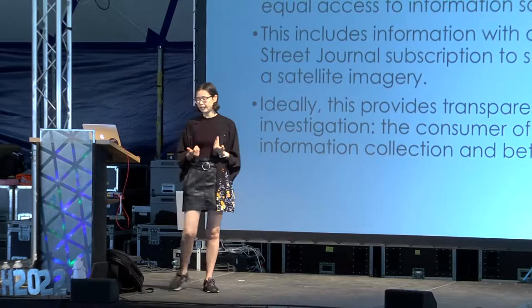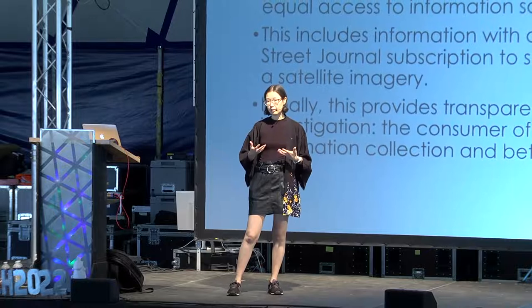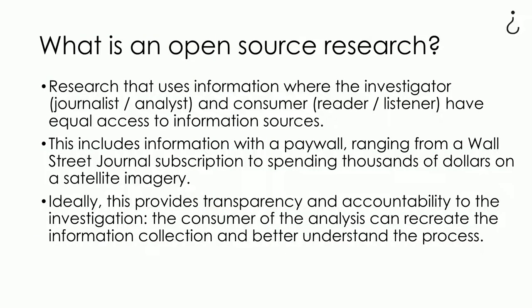This can be as cheap as a couple of dollars, but also expensive, like a couple thousand dollars for satellite imagery. We use satellite imagery a lot at Bellingcat — primarily Google's, but we also have a paid subscription to services like Planet, which costs around one to two thousand dollars a month, giving us access to a huge amount of imagery. There is a budget barrier, but we still consider it open source.